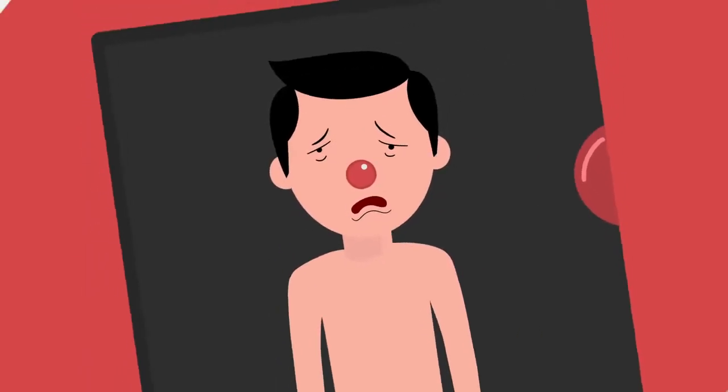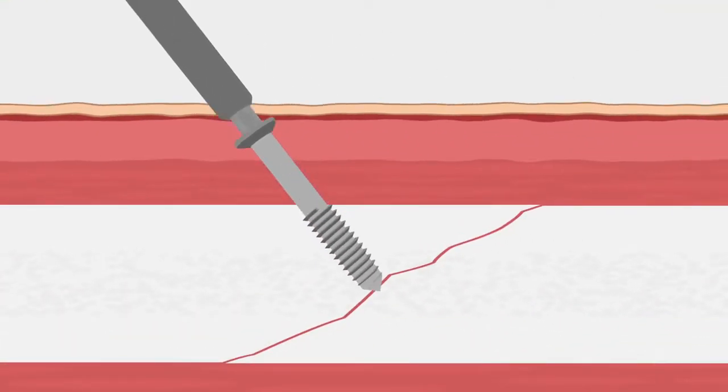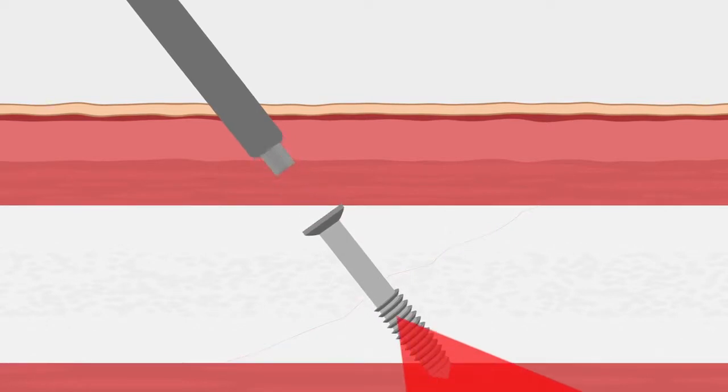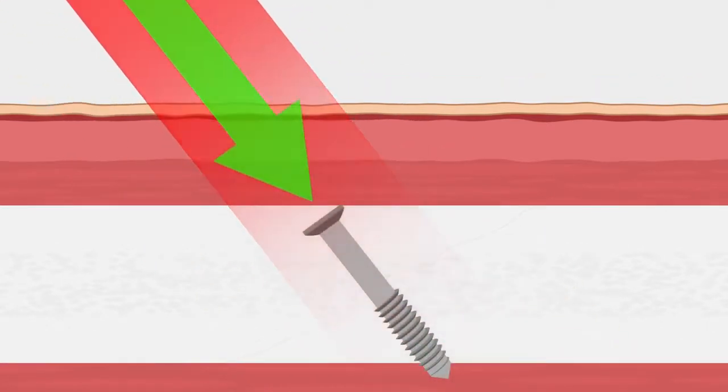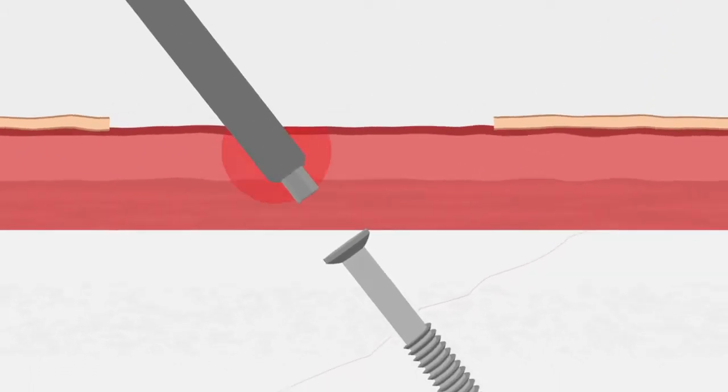This is because conventional bone screws were designed a lot like carpenter screws, which are countersunk into bone. So getting them out is often harder than putting them in, requiring larger incisions and unnecessary trauma.